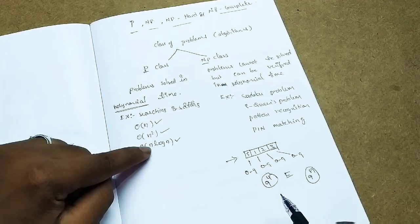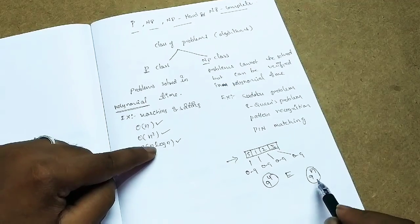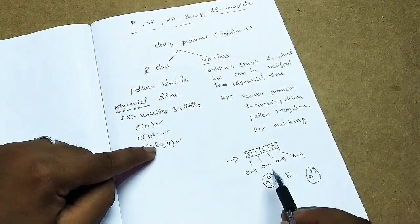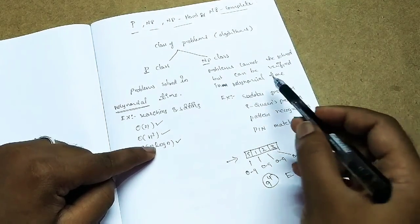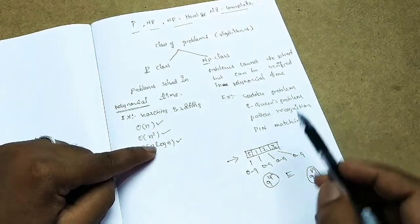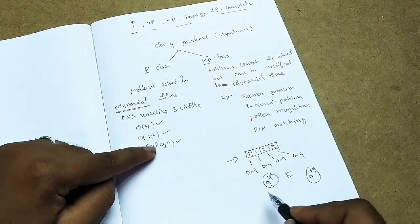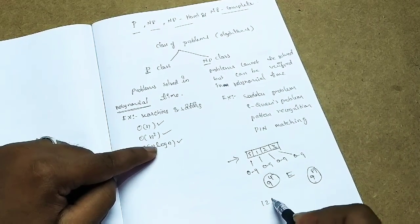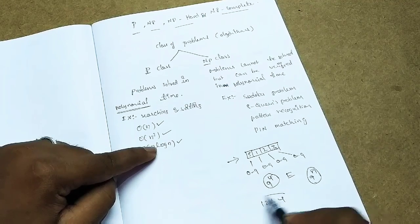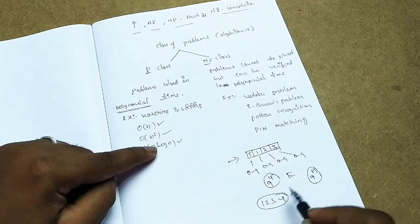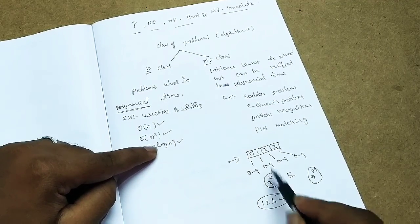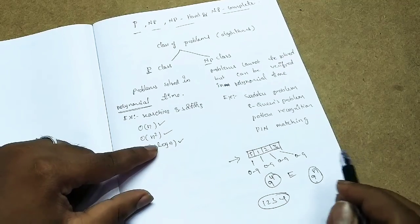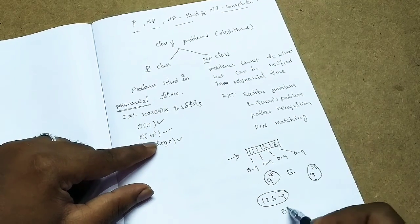Order of N, N squared, N log N — these are polynomial time. But this problem runs in exponential time. However, I can verify a given solution in polynomial time: I check 1, 2, 3, 4 and confirm it is correct — that verification is order of N.